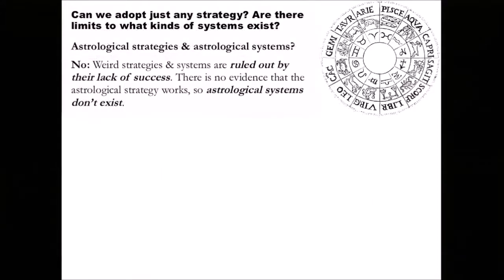There are different questions we can ask. Can we adopt just any strategy? Are there any limits to what kinds of systems exist? We might think it's really useful to take up an astrological strategy and therefore be realists about astrology. But Dennett rules this out because weird strategies and systems are ruled out by their lack of success — there's no evidence that astrology works, so we don't conclude that astrological systems exist. It is really useful for us to attribute beliefs and operate in the space of folk psychology, so we should be realists about folk psychology and about beliefs on Dennett's view, but not about things like astrology.